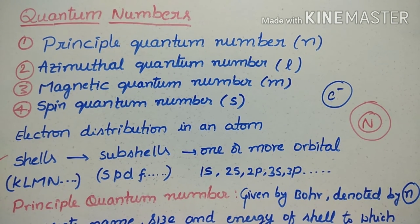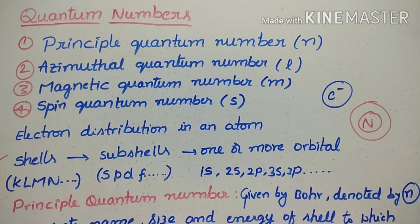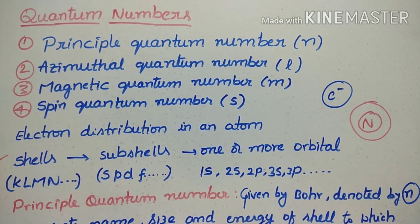According to the wave mechanical theory of the atom, electrons have a wave nature. This is explained by the famous Schrödinger wave equation. By solving this equation, quantized energy levels and energy states are defined, and from these mathematical expressions, quantum numbers are derived.